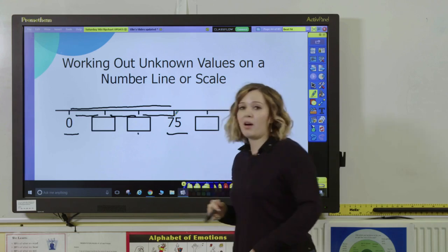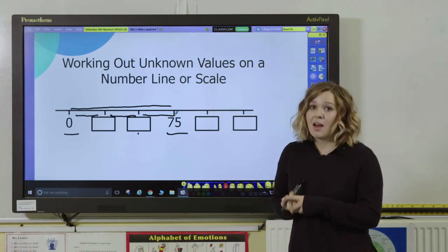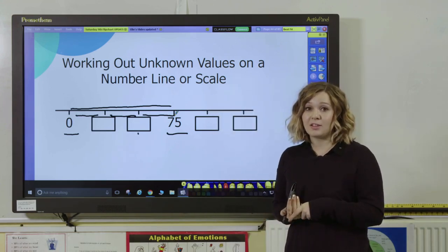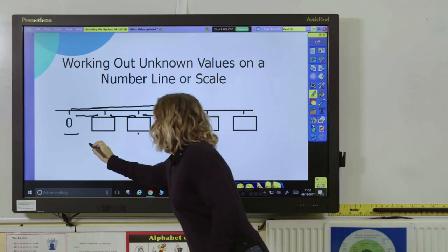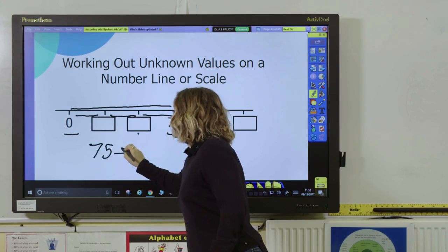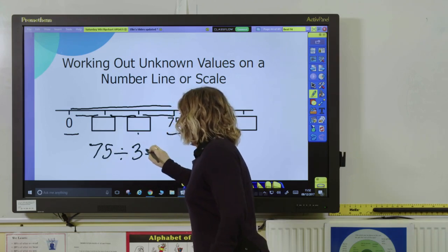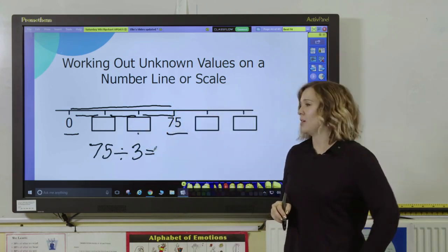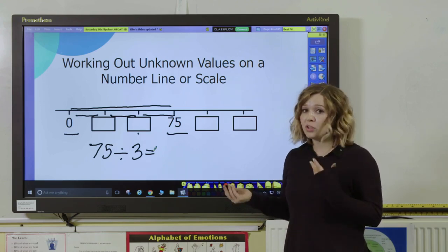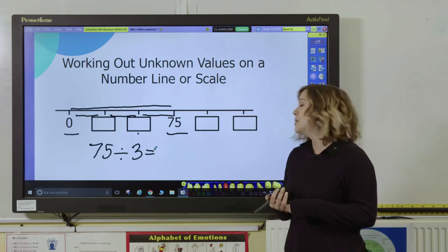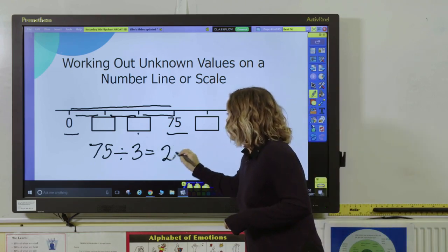So this whole gap is 75. We've got 3 equal parts. If you ask them how do I know how much each of those equal parts is worth, they should be able to know that they've got to do 75 divided by 3 to find out what each equal part is worth. Now they might be able to do that mentally or you could go to written division but they should get to an answer of 25.